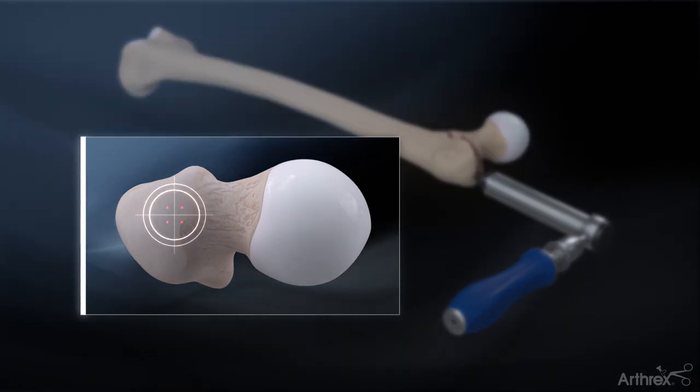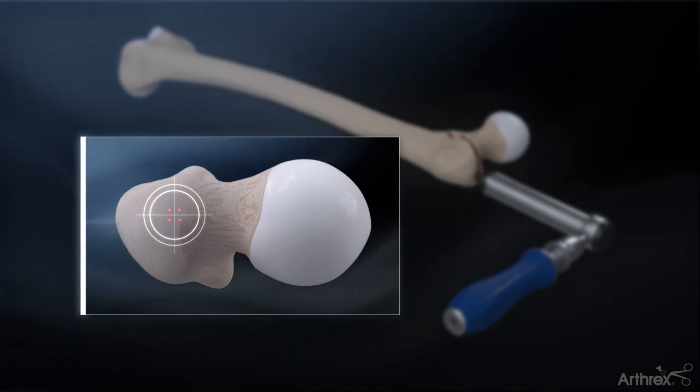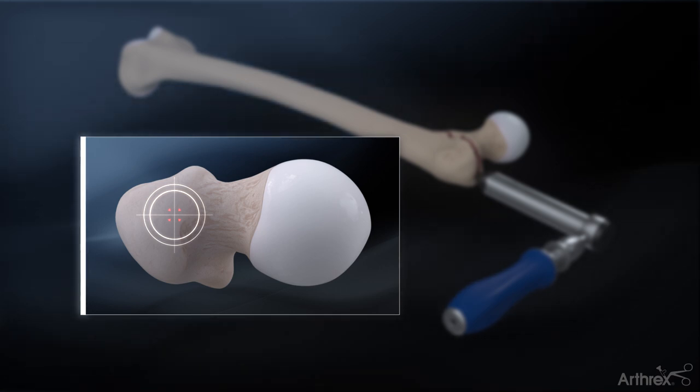The entry point for the nail is typically at the tip of the greater trochanter on the AP X-ray and at the junction of the anterior and middle third of the great trochanter on the lateral X-ray. This point may vary slightly depending on the patient anatomy and fracture pattern.